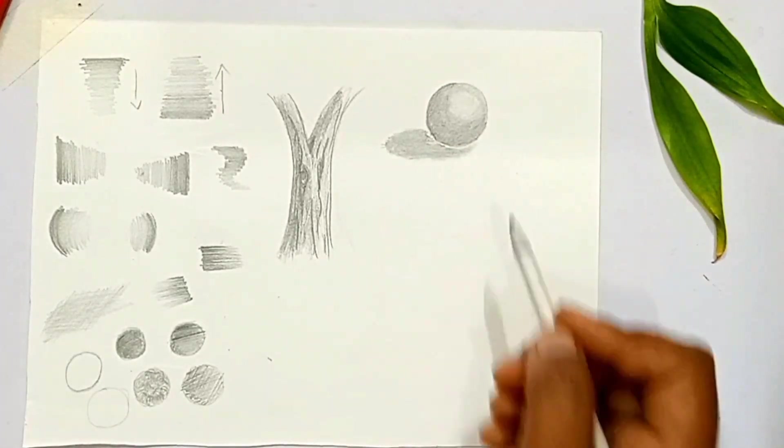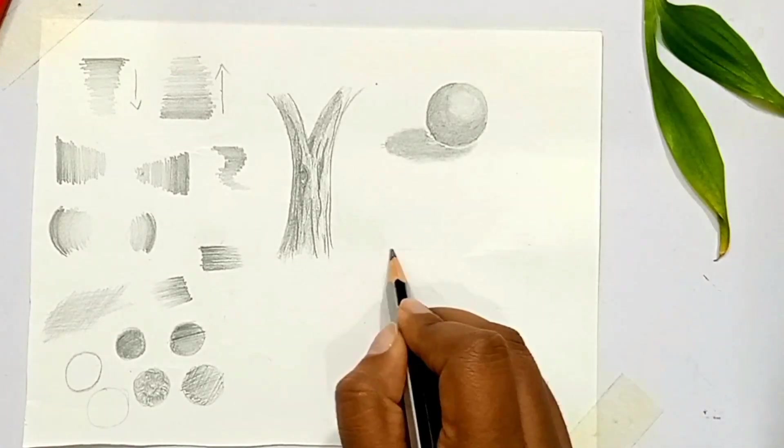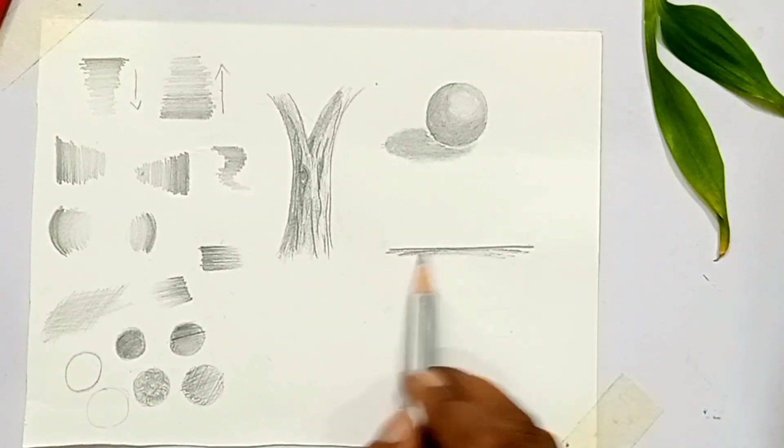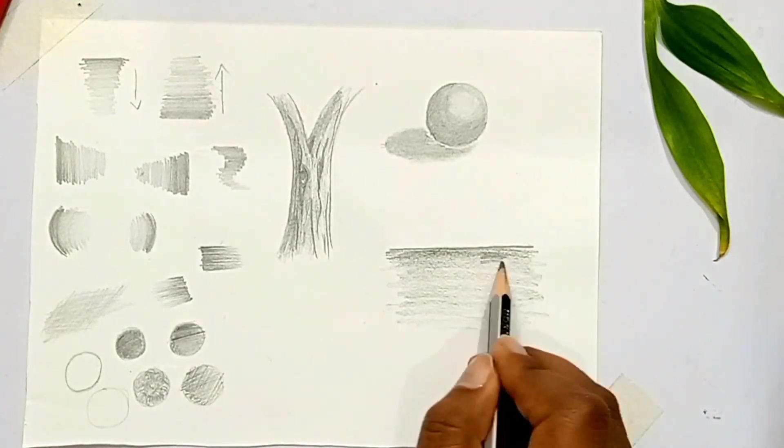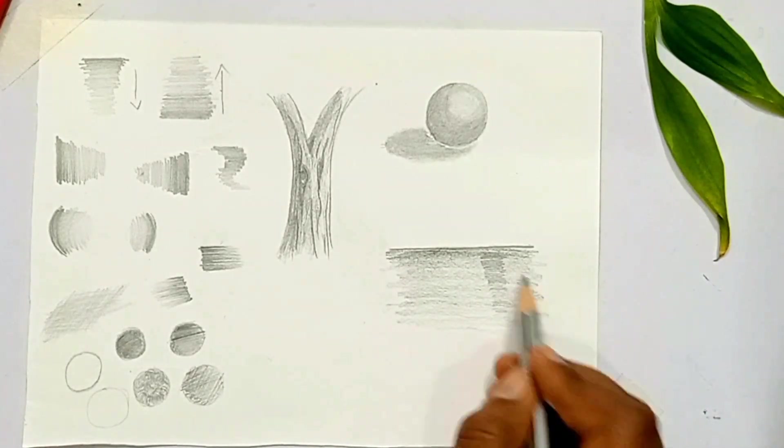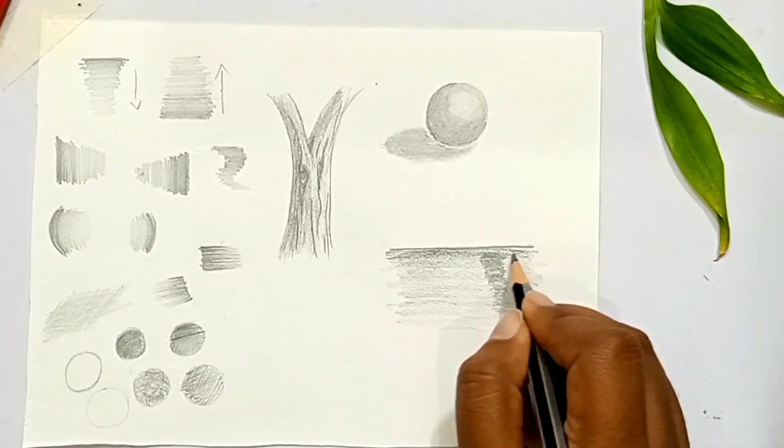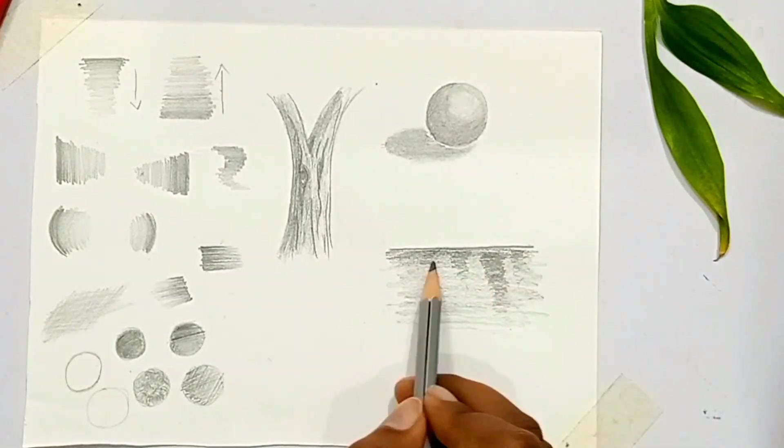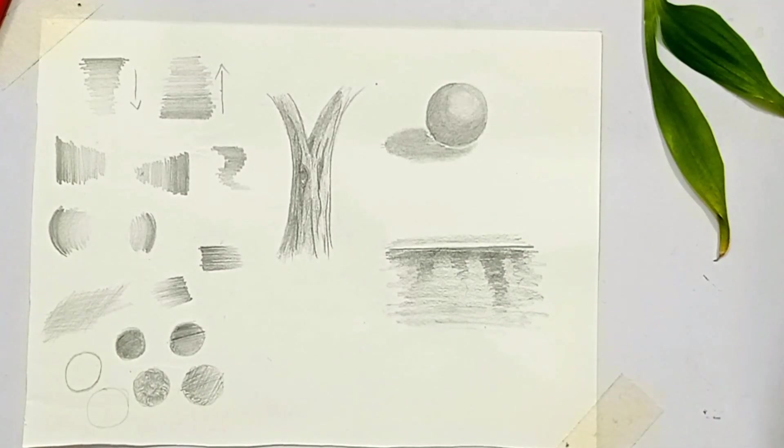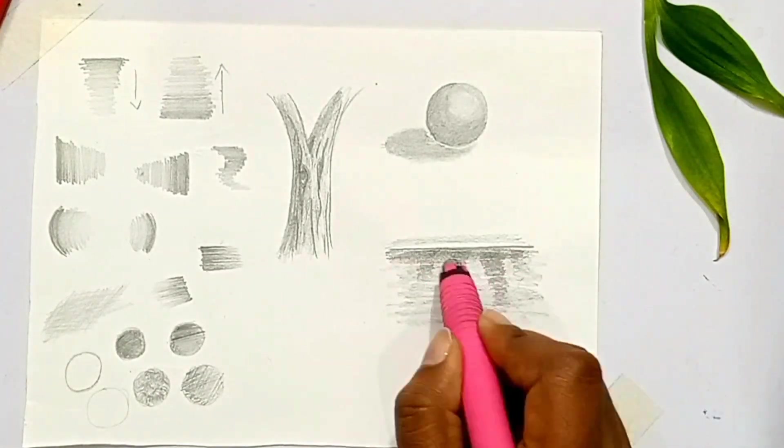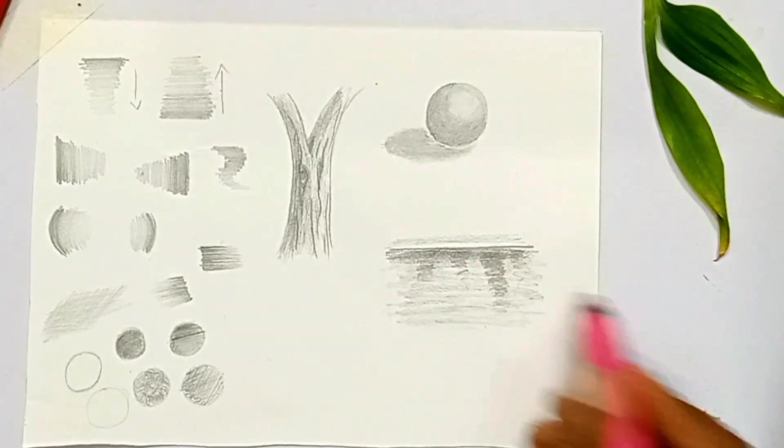Here is the scenery, a landscape drawing. I am making water using dark to light shade. I have made a shadow before.